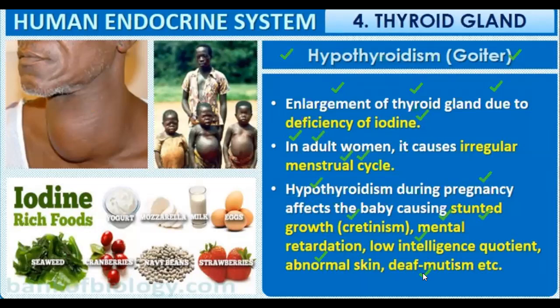To avoid this deficiency disease we should consume iodine-rich foods such as yogurt, mozzarella cheese, milk, eggs, seaweeds, cranberries, navy beans, and strawberries. Hypothyroidism means hypo — less — so thyroid hormones are less in the body.